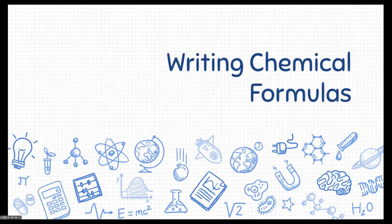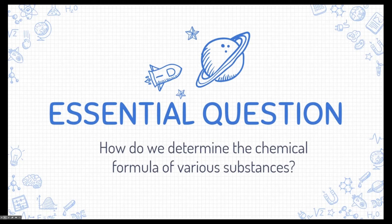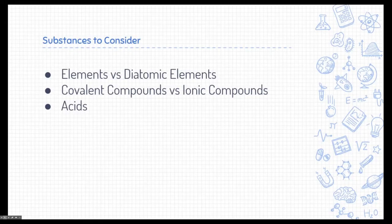All right, students, let's talk about writing chemical formulas. Get out your science notebook. These notes are a really quick and brief review of some things you learned in Chem 1, namely writing chemical formulas or Honors 9 Chem. So we're going to go over how to determine the chemical formula of various substances. These are the different substances we're going to need to consider: elements versus diatomic elements, covalent compounds versus ionic compounds, and acids.